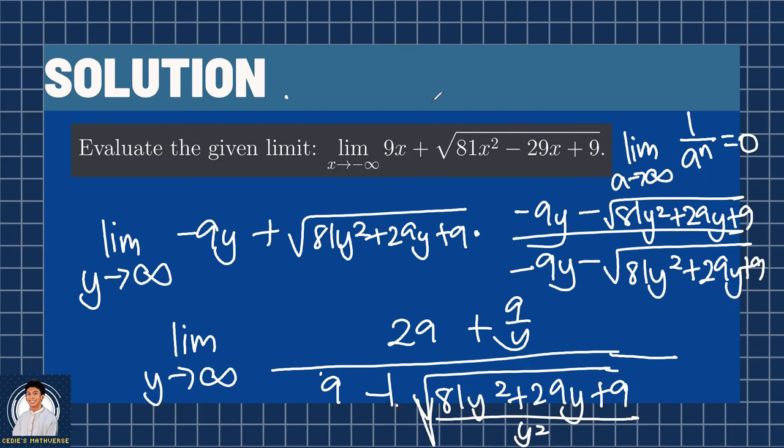So we have 81y squared over y squared is 81. 29y over y squared is 29 over y. And then, 9 over y squared is 9 over y squared.